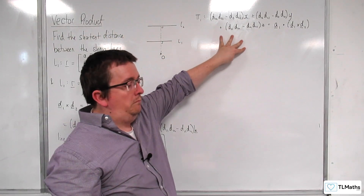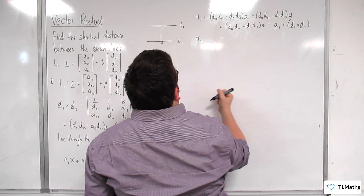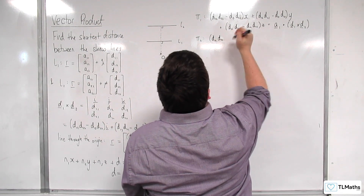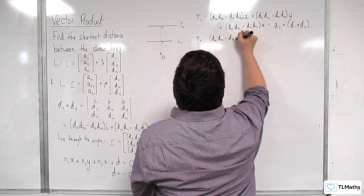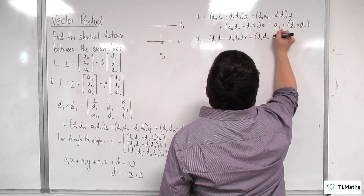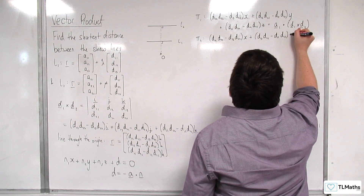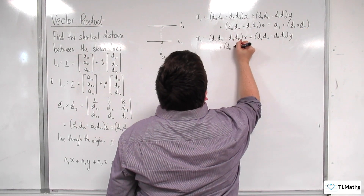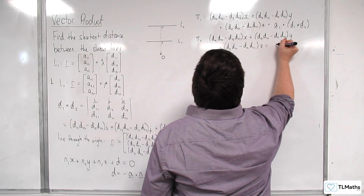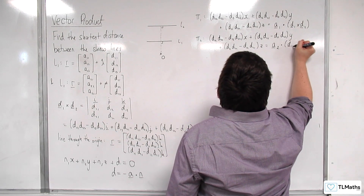I can write a similar equation for plane 2: (D12·D23 − D13·D22)X + (D13·D21 − D11·D23)Y + (D11·D22 − D12·D21)Z, and that equals A2 dotted with D1 cross D2. So these are my two planes.